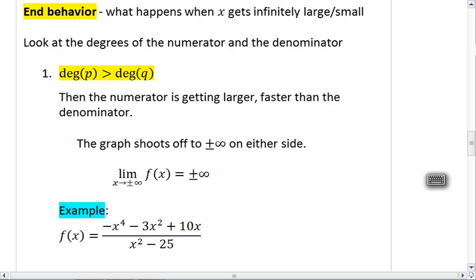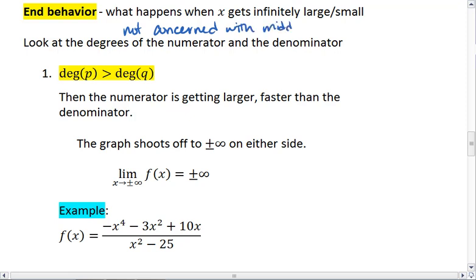We are not concerned with the middle area. What happens in the middle is going to be weird - we'll have roots, vertical asymptotes, a lot of stuff. But end behavior tells us what happens when we look really far to the left and really far to the right.